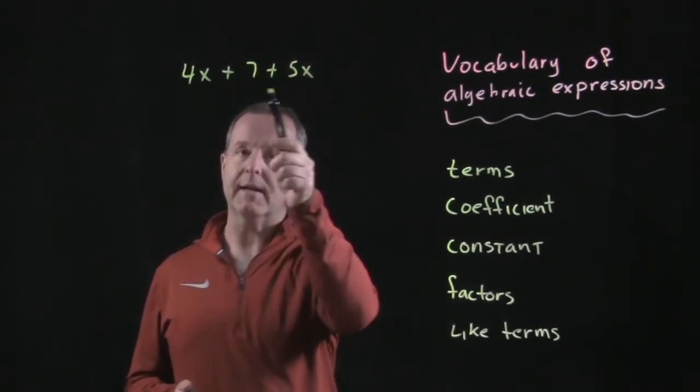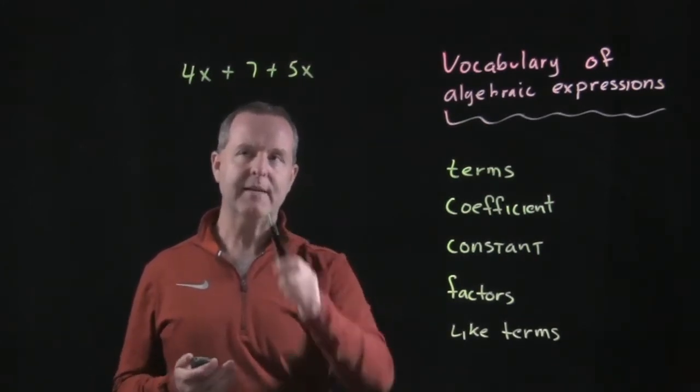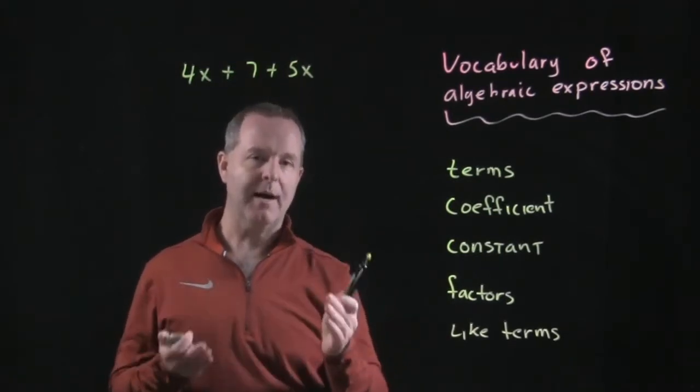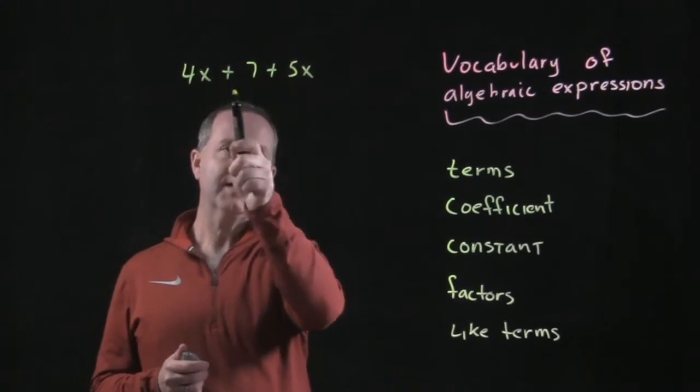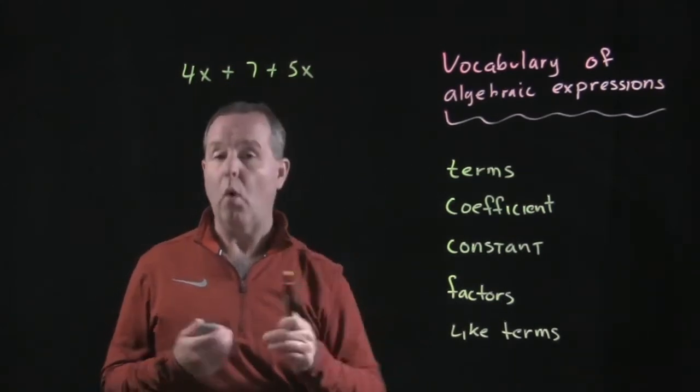So when we see an algebraic expression, we want to be able to identify what each of those objects within the expression means. So, 4x plus 7 plus 5x, what are the terms?